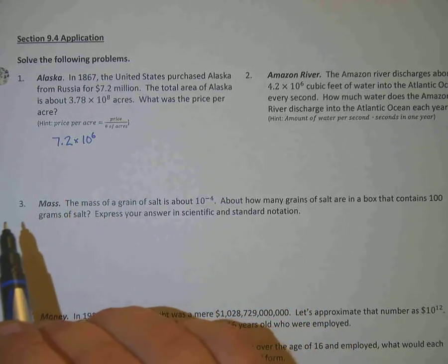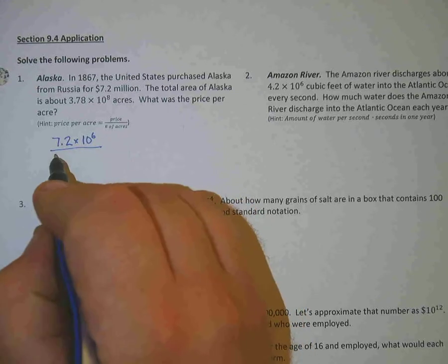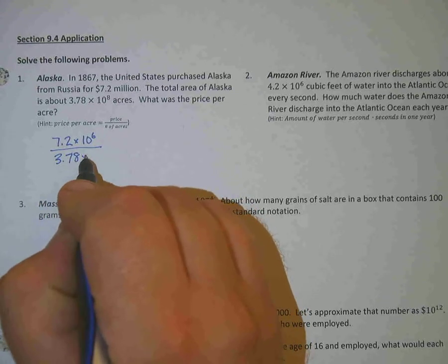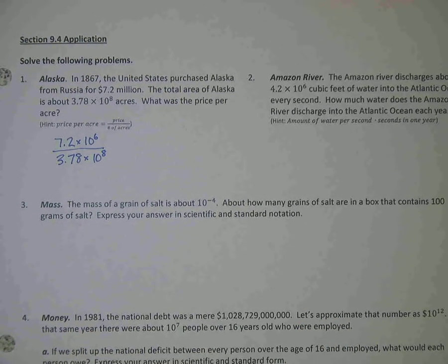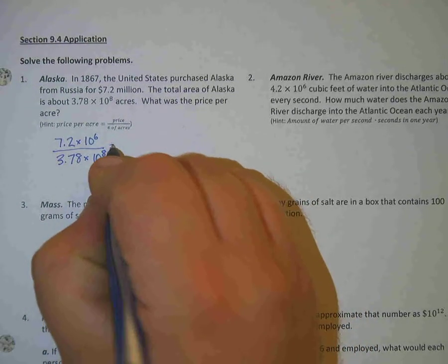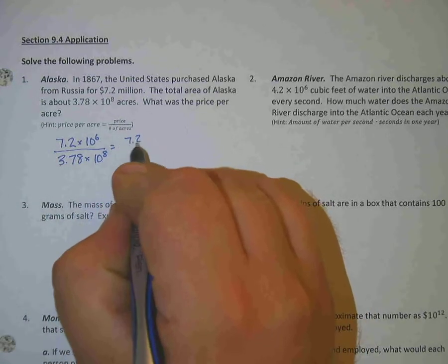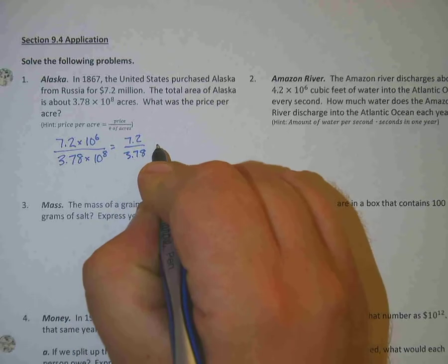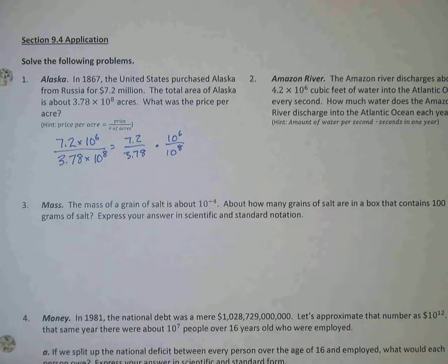So this is the price right here. And then the number of acres, we also have that in scientific notation. So that's 3.78 times 10 to the 8th. So let's go ahead and treat numbers like numbers and exponents like exponents. I'm going to go 7.2 divided by 3.78, and then I'm going to multiply that by 10 to the 6th over 10 to the 8th.